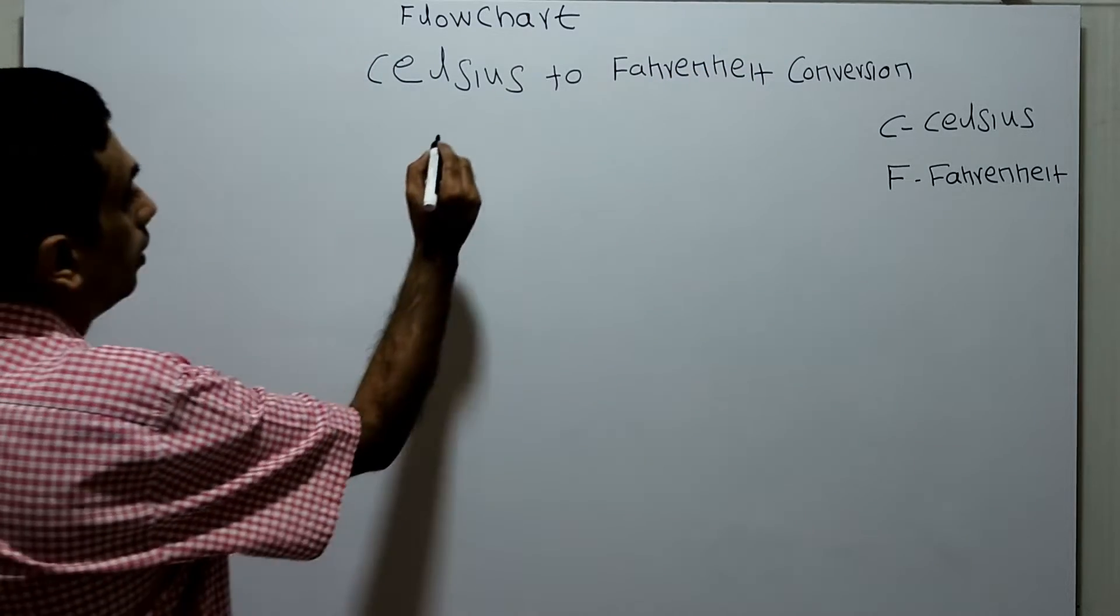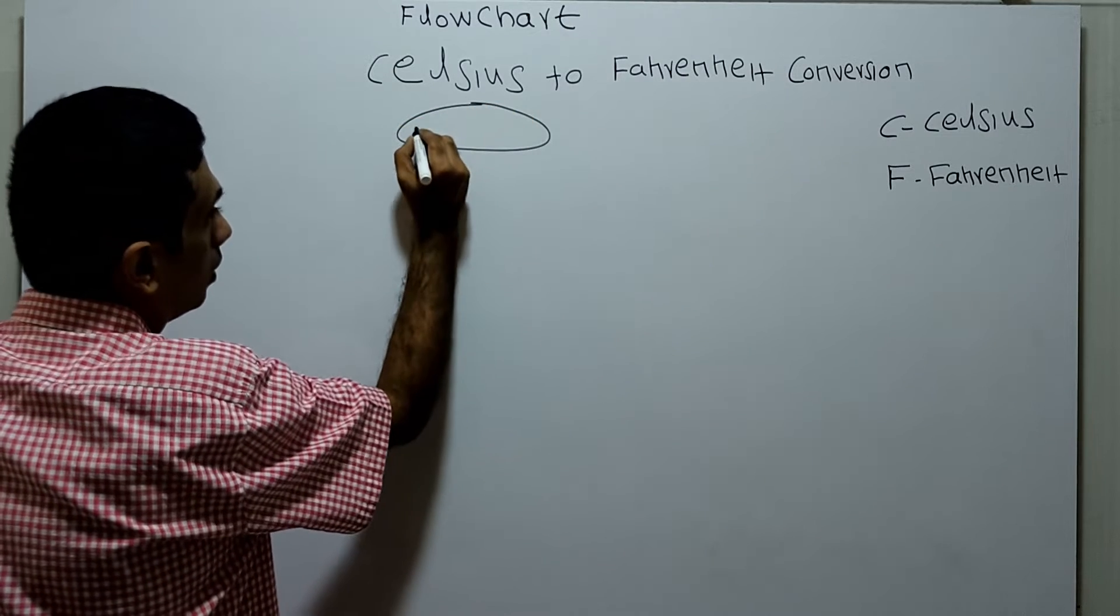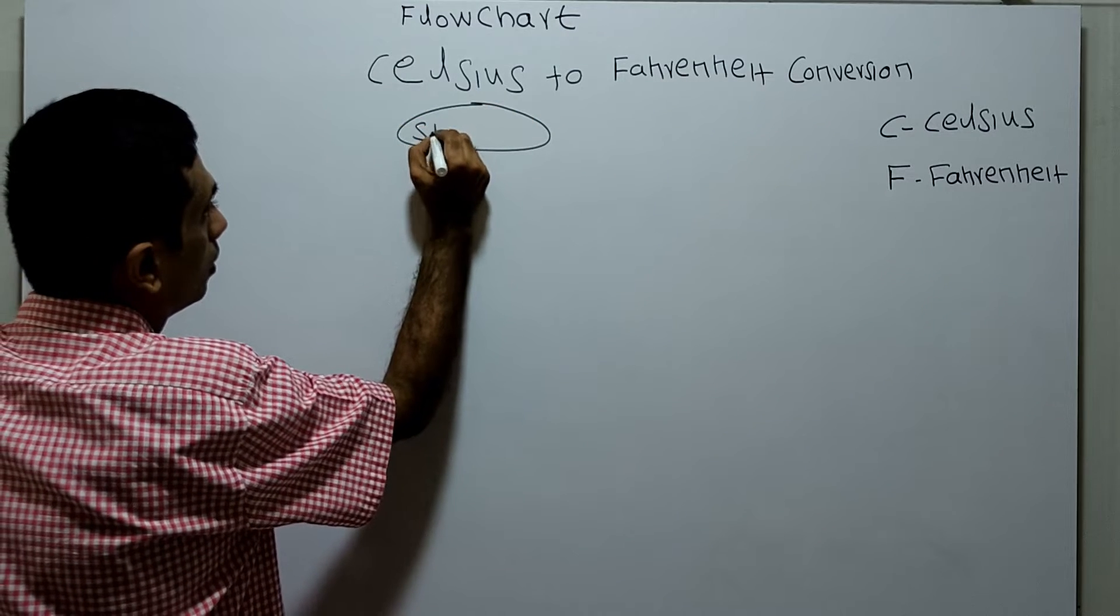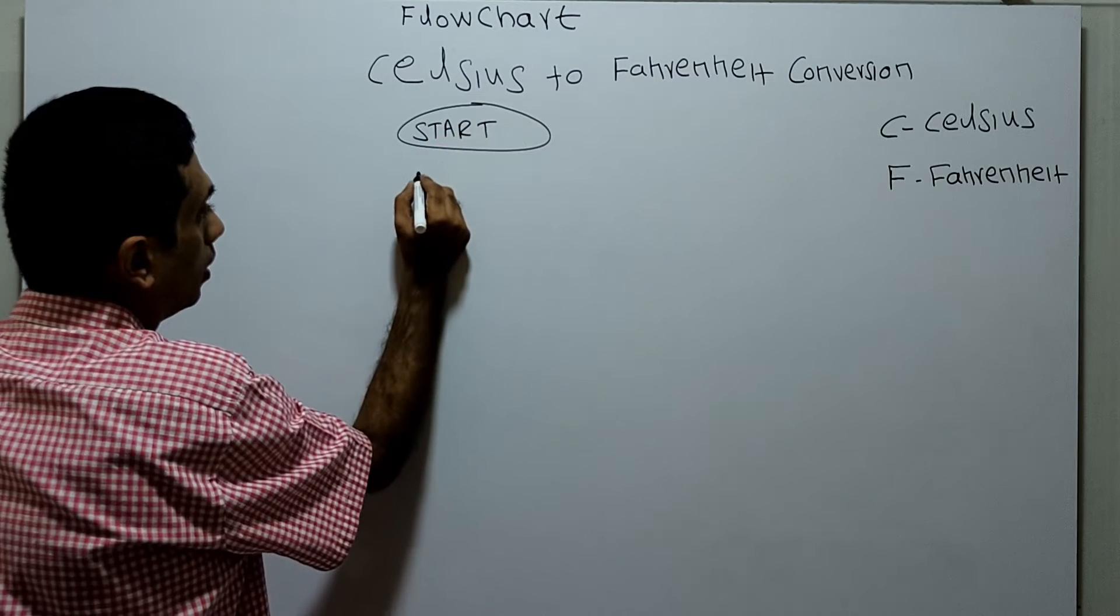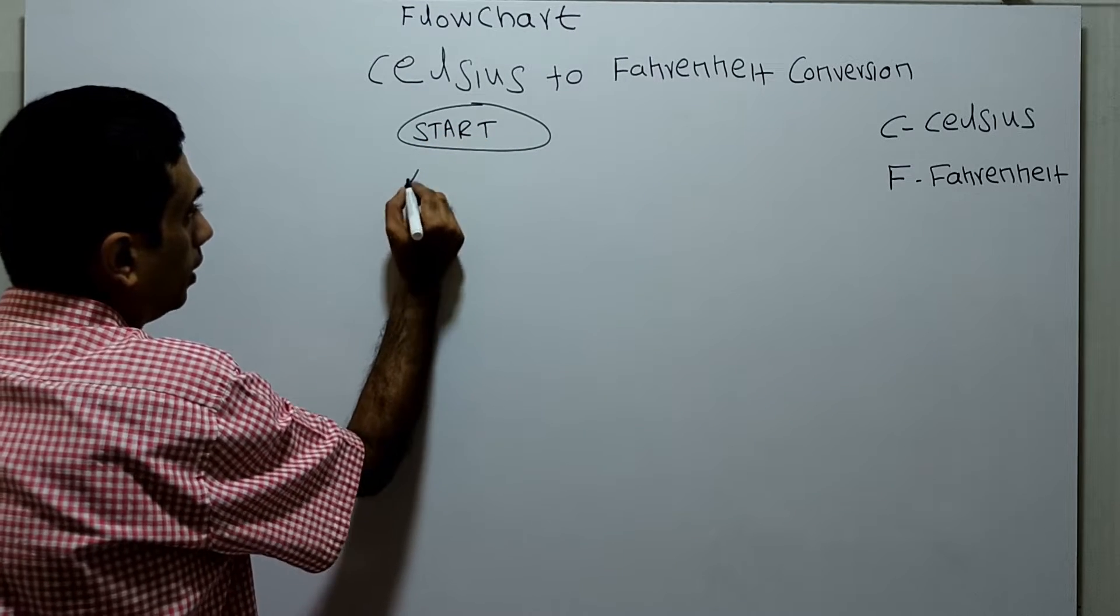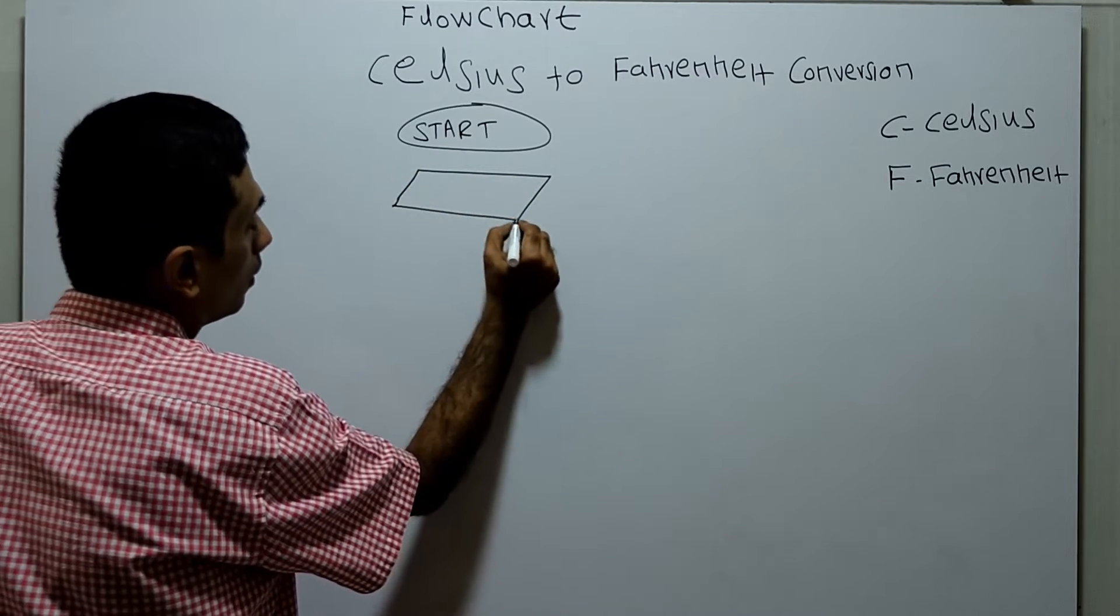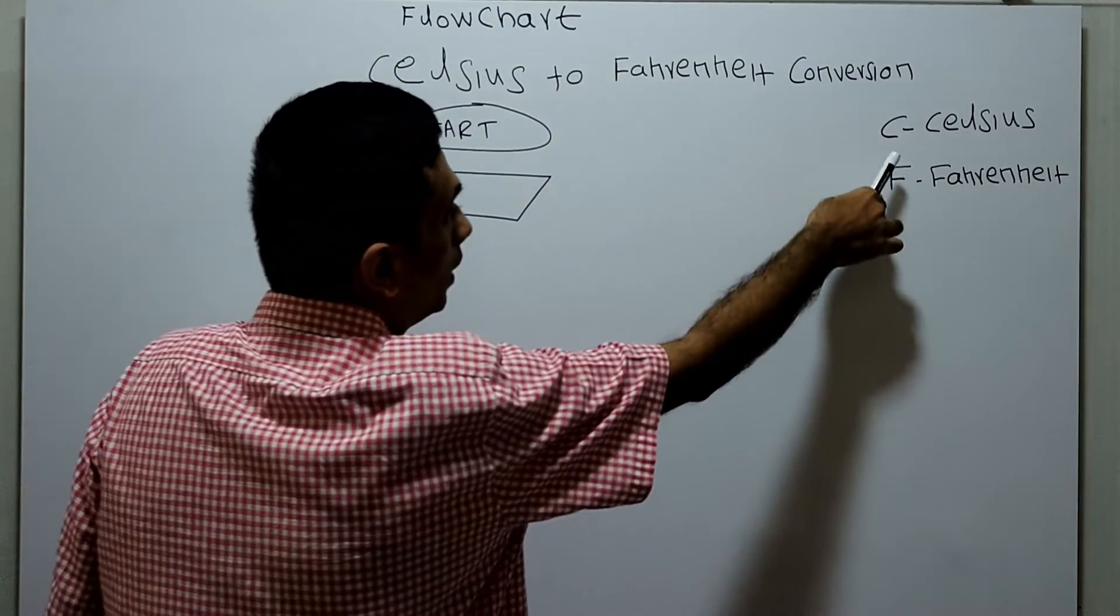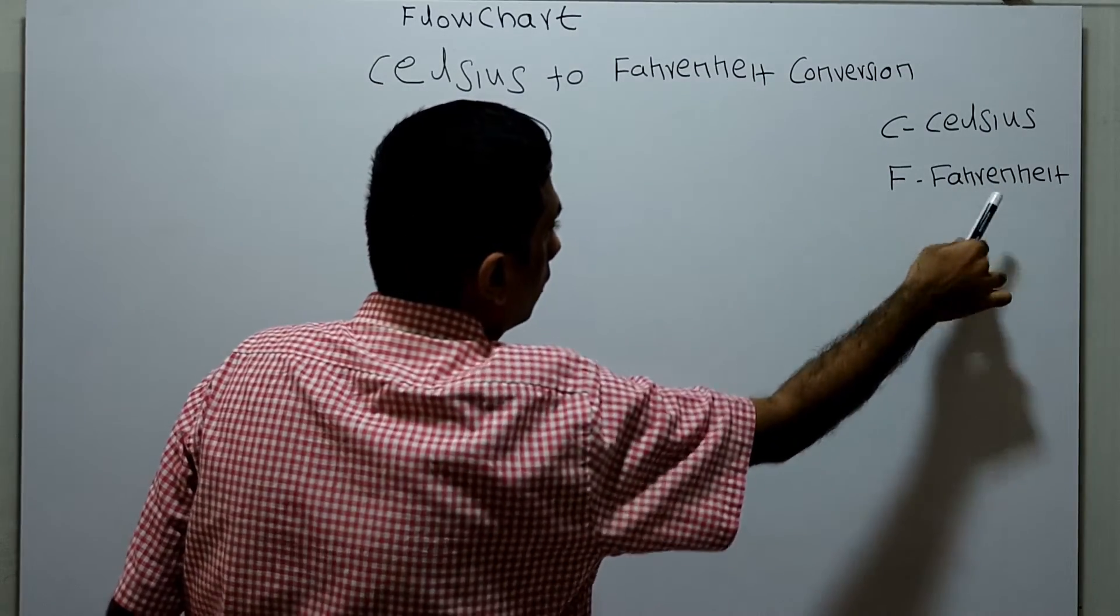This is the logical start of the flowchart. I am obtaining the centigrade value from the user. I am using variable C for Celsius and F for Fahrenheit.